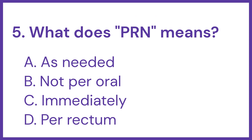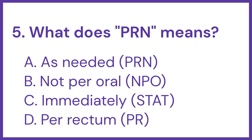Next question. What does PRN mean? Options are: A, as needed; B, not per-oral; C, immediately; D, per-rectum. The answer is option A, as needed.